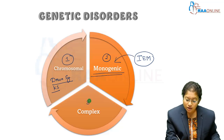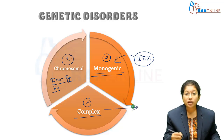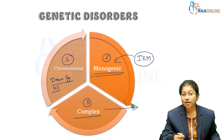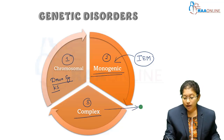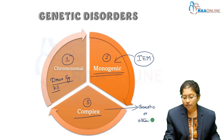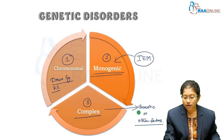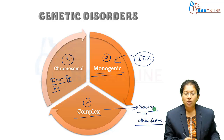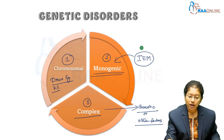The last one is complex. Complex means it is multifactorial — it contains genetic involvement as well as any other environmental or external factors. Now we will concentrate on the inborn errors of metabolism.